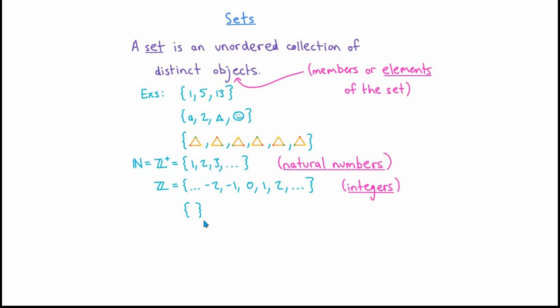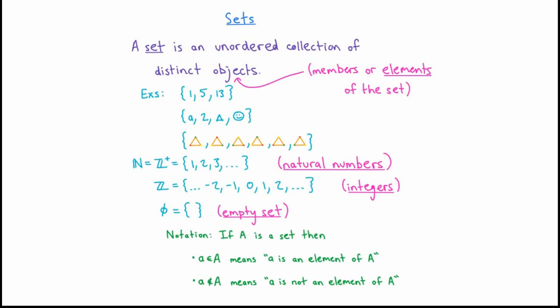This is another very important example of a set, but when you look inside the curly braces, you can see that it doesn't have any elements. The set with no elements is denoted by the Greek letter phi, and it's referred to as the empty set. It's also important to establish notation to indicate whether or not a certain object is an element of a set. If little a is an element of the set capital A, the little symbol that looks like a small curved e means 'is an element of.' If we want to indicate that a is not an element of A, we use the same symbol but draw a line through it.